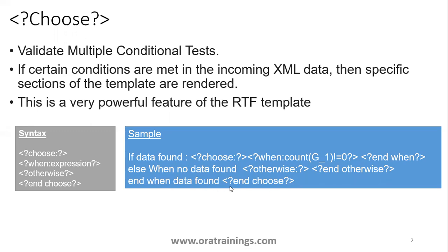In most cases, if the starting tag is choose, the ending tag will generally be end choose. Similarly, for a for loop it will have an end for. So this is the syntax and a sample for the choose. We'll see the if condition also, and then we'll see the sample later.